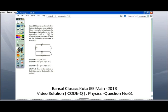Okay, this is the 61st question of Code Q. I will read out the question. In an LCR circuit as shown below, both switches are open initially. Now switch S1 is closed, S2 kept open. Q is the charge on the capacitor and tau equal to RC is the capacitive constant. The point to be noted is that although they say this is an LCR circuit, the useful part is only the resistance and the capacitance.